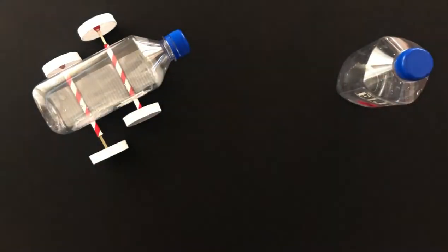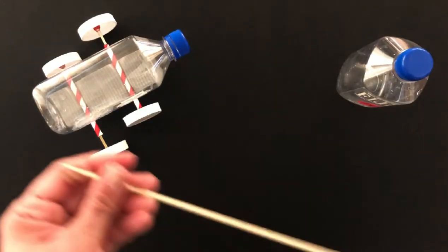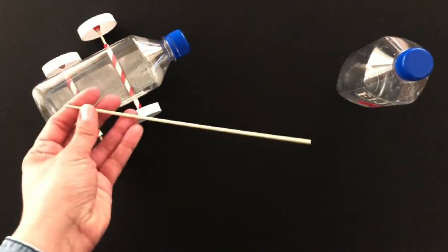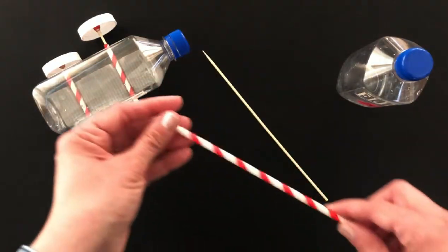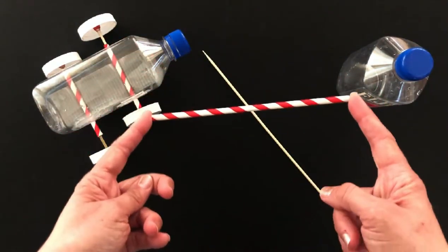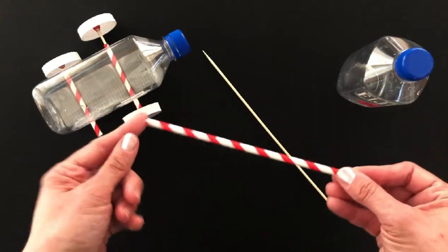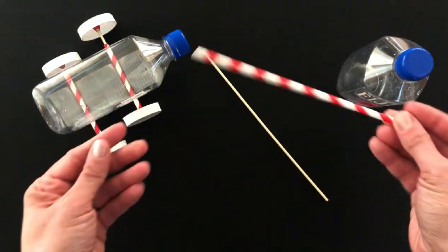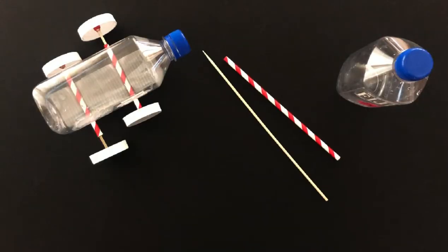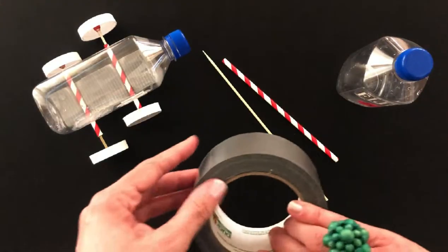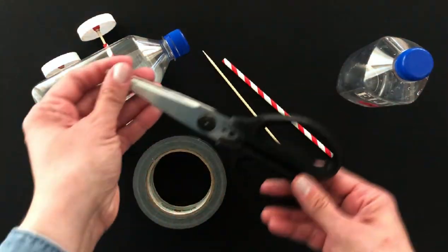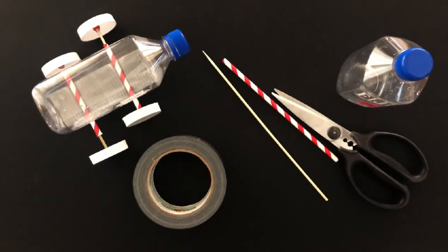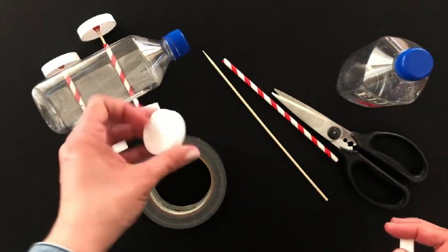You need a bamboo skewer, this is about a 10 inch long skewer which is the perfect length. A paper straw, if you have a plastic one you can use that too, we're trying to move towards paper straws because they're better for the environment. You need some duct tape, a pair of scissors, some plastic caps.